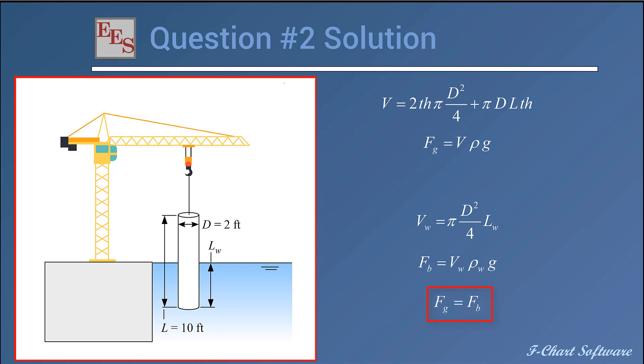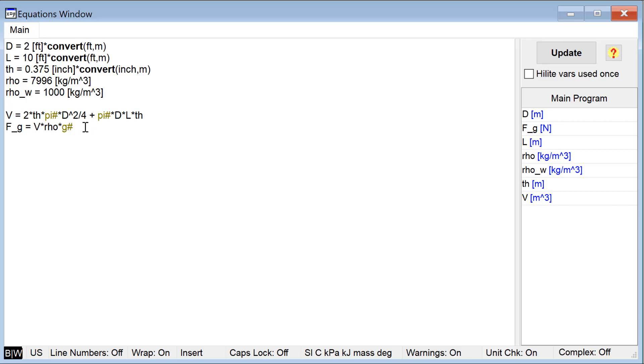And that is that I want to know this submersion depth at the point where the force of gravity exactly equals the force of buoyancy, so that there's no tension in this cable that's being used to hold the cylinder. So that's my last equation. Now I have three equations and three unknowns. I can go off to EES and enter them one at a time.